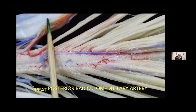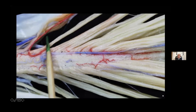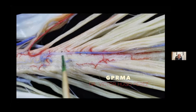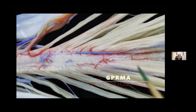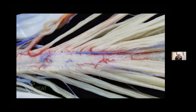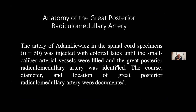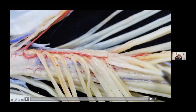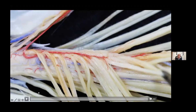This artery is coming along the 12th thoracic nerve root on the right side. This artery makes a curve and goes to the posterior lateral aspect of this spinal cord, then returns to the posterior aspect. The artery of Adamkiewicz in the spinal cord specimens — a number of 50 — was injected with colored latex until the small caliber arterial vessels were filled. This is another small video about the great posterior radicular medullary artery.